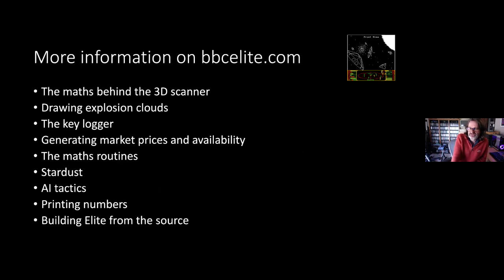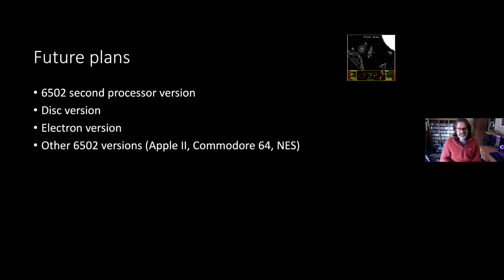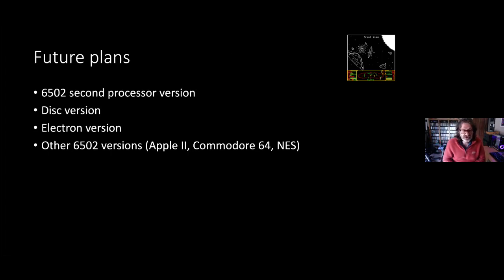That's pretty much everything covered in the talk. There's loads more on bbcelite.com — things like the 3D scanner, explosion clouds, the key logger, market prices, all the maths, stardust routines, how tactics work, printing numbers, and a link to the GitHub repository to build Elite from source. For future plans, the work is integrating the 6502 second processor version so one source can build both, enabling direct comparison between the cassette and second processor versions. One day hopefully the disk version, the Electron version, and other 6502 versions too.